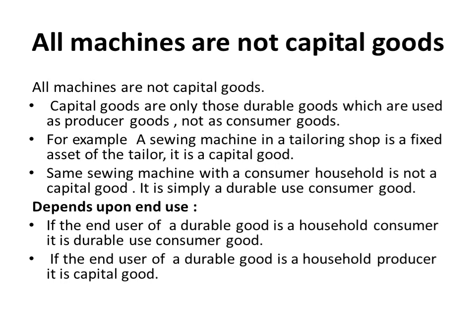Capital goods are only those durable goods which are used as producer goods, not as consumer goods. For example, a sewing machine in a tailoring shop is a fixed asset of the tailor — it is a capital good. But the same sewing machine in a consumer household is not a capital good; it is simply a durable-use consumer good.